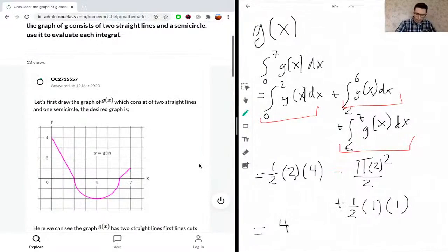So here we would have pi times 2 squared which is 4 pi divided by 2 which gives us 2 pi, so subtract 2 pi. And then finally we have a half times 1 times 1, so we'll just add a half.